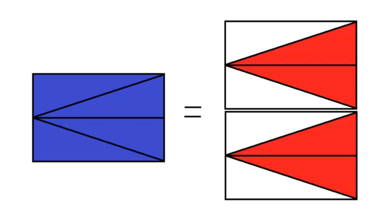The original rectangle has been split into four identical triangles. You can see that its area is twice the area of the shaded triangle on the right. Now let's find an expression for the area of the rectangle on the left.